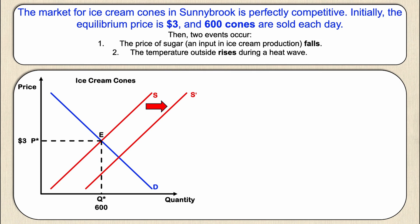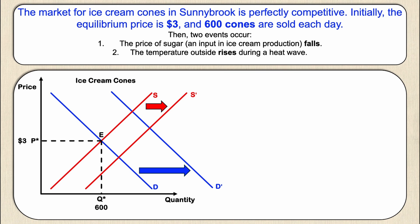The second event says that the temperature outside rises during a heat wave. This doesn't really impact supply but it does impact demand, because if the temperature goes up people are going to demand more ice cream. This would be a change in their tastes or preferences. This creates a rightward shift in demand, or an increase in demand. Both curves move to the right as shown by their arrows, and the new demand curve is denoted D prime to indicate it's the new demand curve.